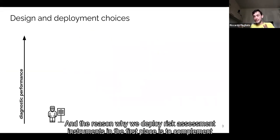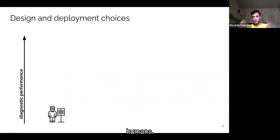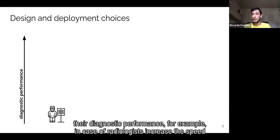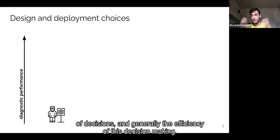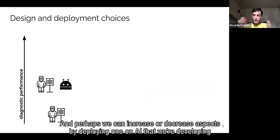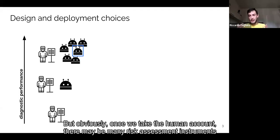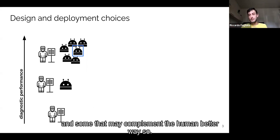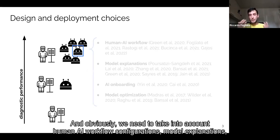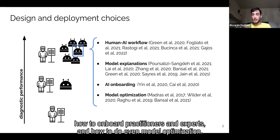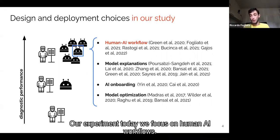And the reason why we deploy risk assessment instruments in the first place is to complement humans. So we hope that by deploying these tools we are going to complement the human and increase their diagnostic performance, for example in case of radiologists, increase the speed of decision making and generally the efficiency of decision making. And perhaps we can increase all these aspects by deploying one RAI that we developed in the vacuum without thinking about the human. But obviously, once we take the human into account, there may be among many RAIs some that may complement the human in better ways. And obviously, we need to take into account human AI workflow configurations, model explanations, how to onboard the practitioners and experts onto the model, and how to do even model optimization. And our experiment today will focus on human AI workflows.